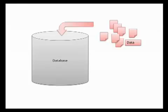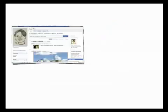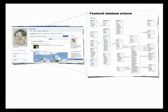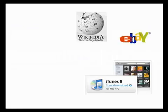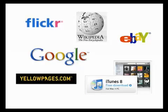Electronic databases are typically created to collect, organize, and store information that can later be searched and retrieved. We often use databases without really thinking about it. eBay, Wikipedia, iTunes, YellowPages.com, Flickr, and Google all use some sort of back-end database to support their websites. These databases are similar in their purpose, but different in the kind of information they deal with, so their search boxes are different too.